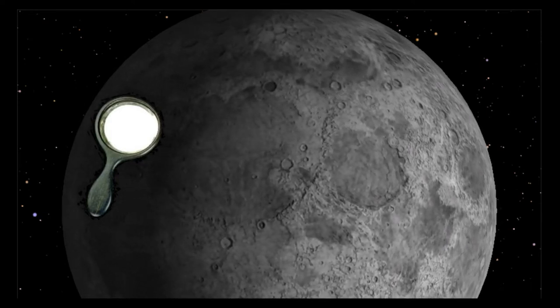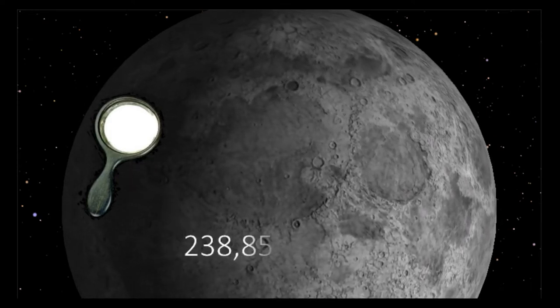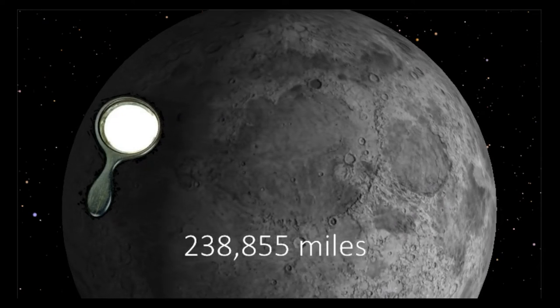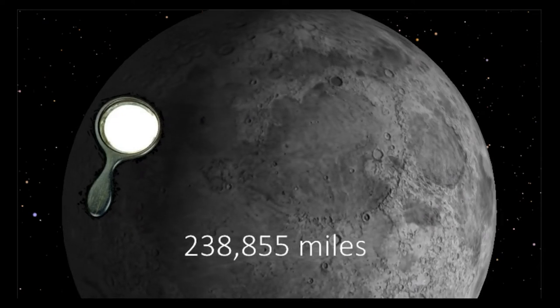Since we know the speed of light, the time it takes for light to travel from Earth to the moon and back tells us how far away the moon is.